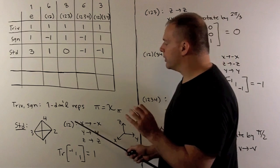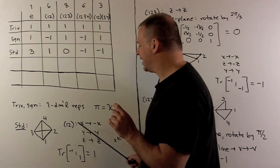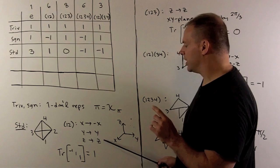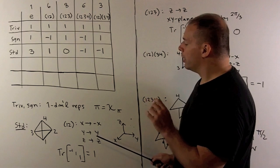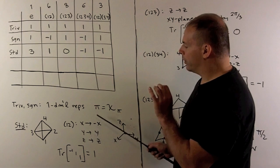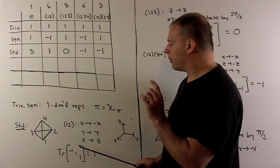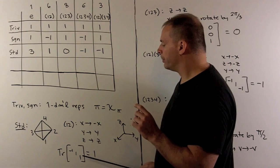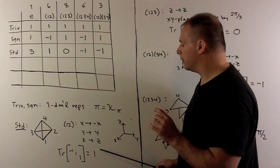For the identity element, the trace equals three since we have a three-dimensional vector space. For a two-cycle, the transposition sends x to minus x, y to y, and z to z. So with respect to the standard basis, our matrix is diag(−1, 1, 1), and taking the trace gives us one.